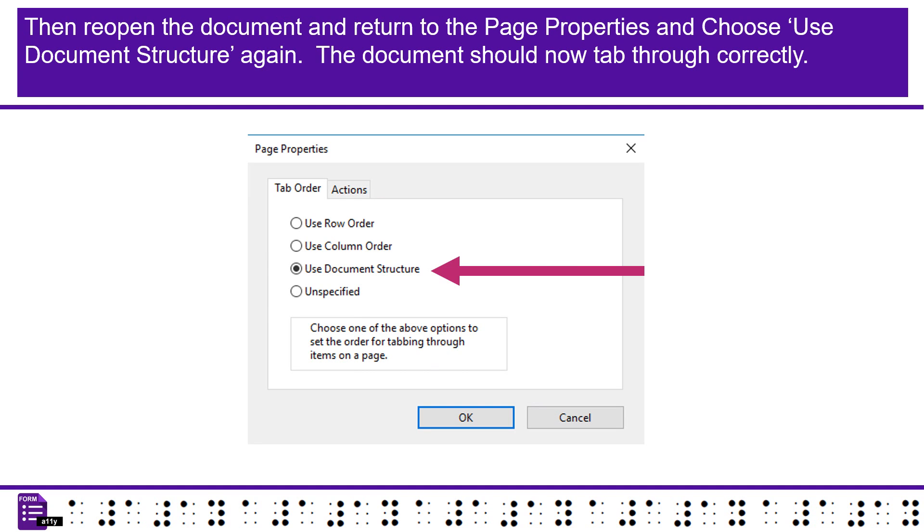Then reopen the document and return to the page properties, and choose Use Document Structure again. The document should now tab through correctly.